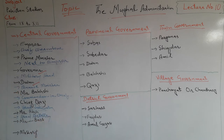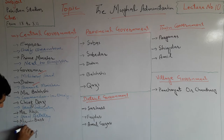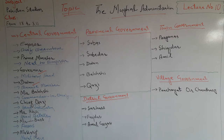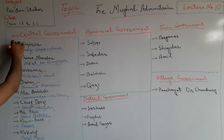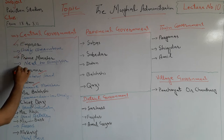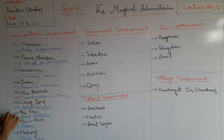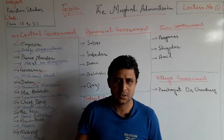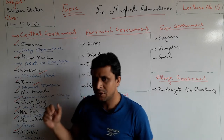Mir Birth was the head of the forest, and Mushrif was the head of the naval force. In this way the central government was structured: Emperor, Prime Minister, Governor, Divan, Mir Bakshi, Chief Kazi, Mir Atish, Mir Birth, and Mushrif. Other departments also existed but these were the major ones.